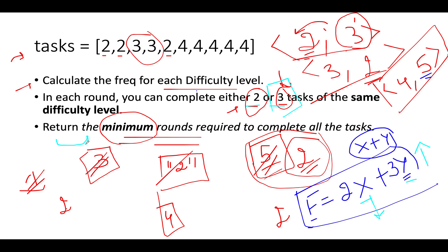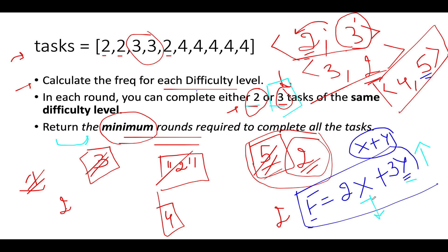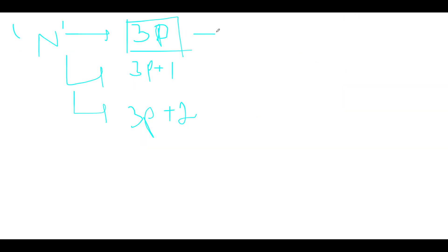Any natural number fits one of three formats: 3p, 3p+1, or 3p+2. If n equals 3p, it is simple: x is 0, we take p rounds each of three tasks. For example, n=6 gives p=2 rounds.